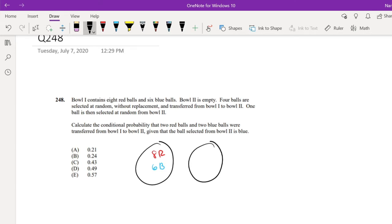4 balls are selected at random without replacement and transferred from ball 1 to ball 2. Calculate the conditional probability that 2 red balls and 2 blue balls were transferred from ball 1 to ball 2 given that the ball selected from ball 2 is blue.